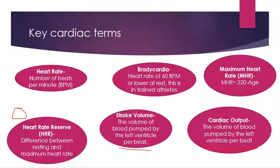The last term is bradycardia — a heart rate of 60 beats per minute or lower at rest in trained athletes. As a long-term training effect, athletes develop a stronger, bigger heart muscle capable of pumping out more blood. Therefore, the resting heart rate is lower because the heart achieves the same blood circulation with fewer beats, as it contracts harder and forces more blood around the body.